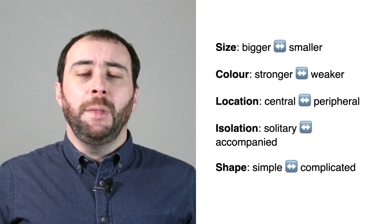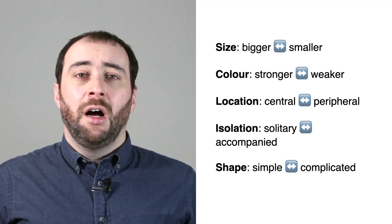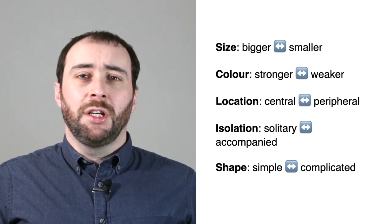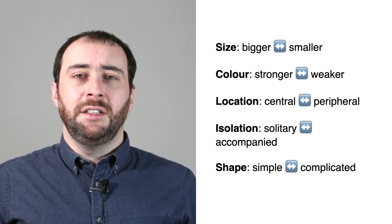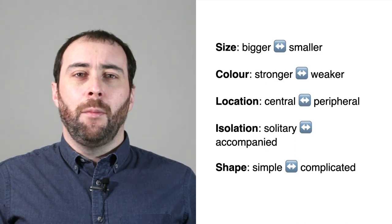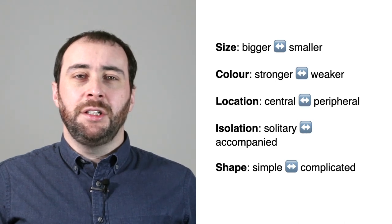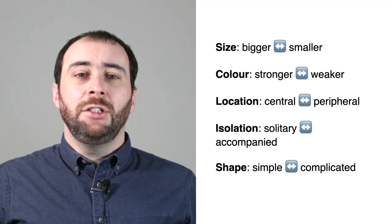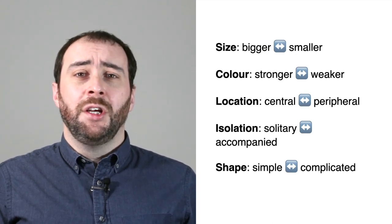Location also matters — something in the middle of the map is going to appear more important than something on the edge. Isolation is another factor: something that's solitary and picked out on the map is going to be more visually striking and appear more important than something accompanied by lots of other things that hides in clutter. On a previous map, we added white areas around circles illustrating particular crime locations to make them more isolated so they stand out more. And shape — some shapes, particularly simple shapes, are more likely to stand out than the complicated outlines of polygons on maps.